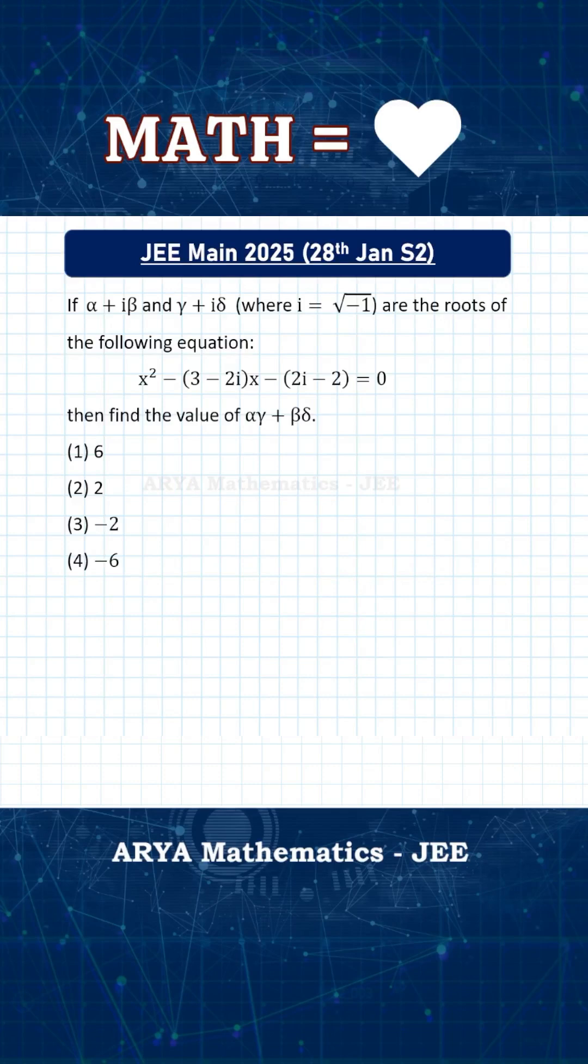One simple observation and you can find the correct answer of this problem without actually solving it. If alpha plus iota beta and gamma plus iota delta, where iota is root over minus 1, if these two are the roots of this quadratic equation in x, then we have to find the value of alpha gamma plus beta delta. Basically, we have to find the roots of this quadratic equation and then by comparing, we have to find alpha, beta, gamma, and delta.